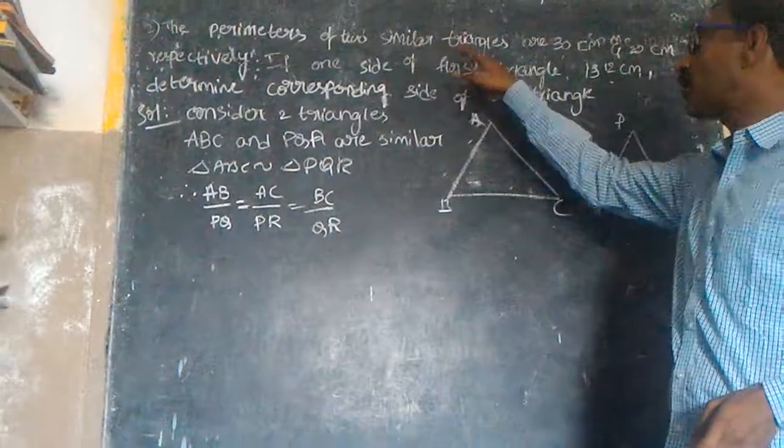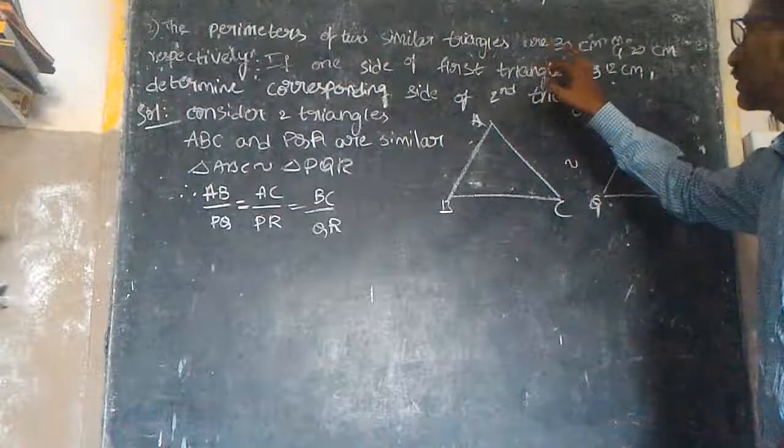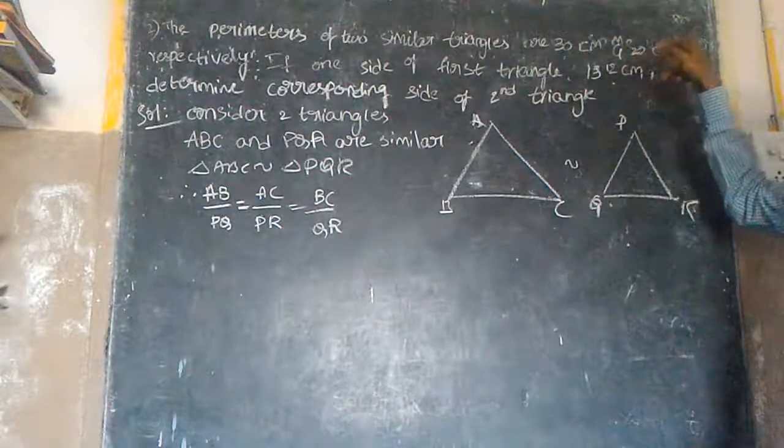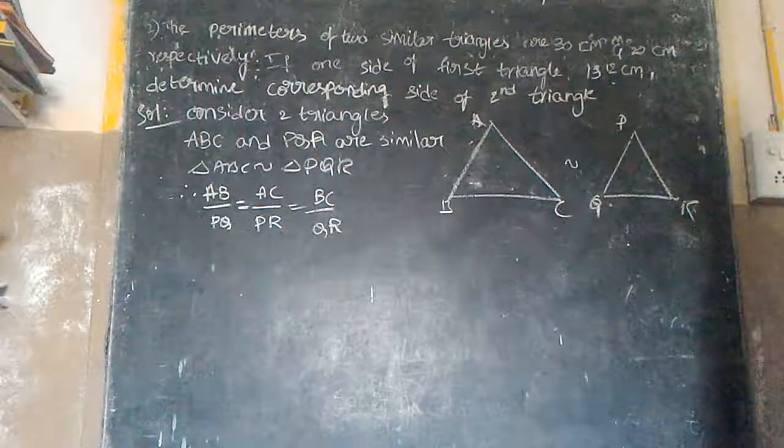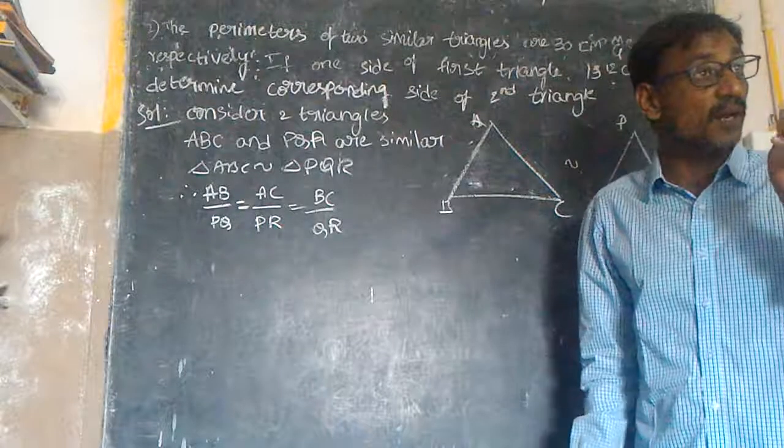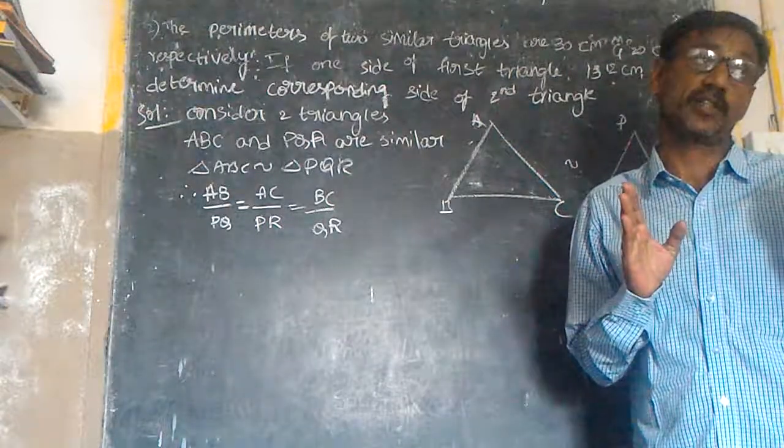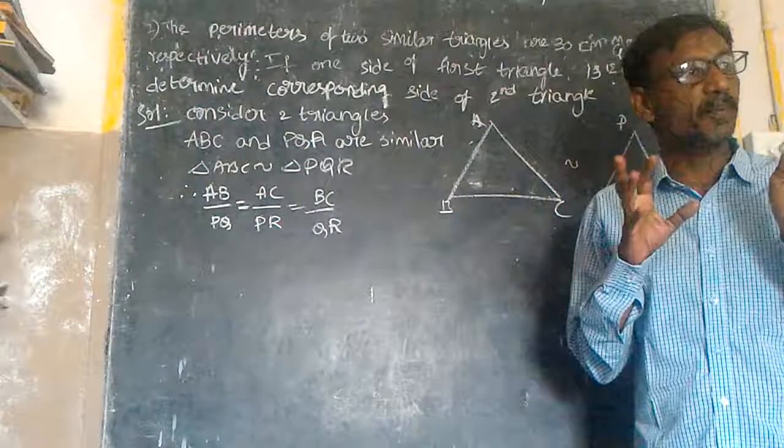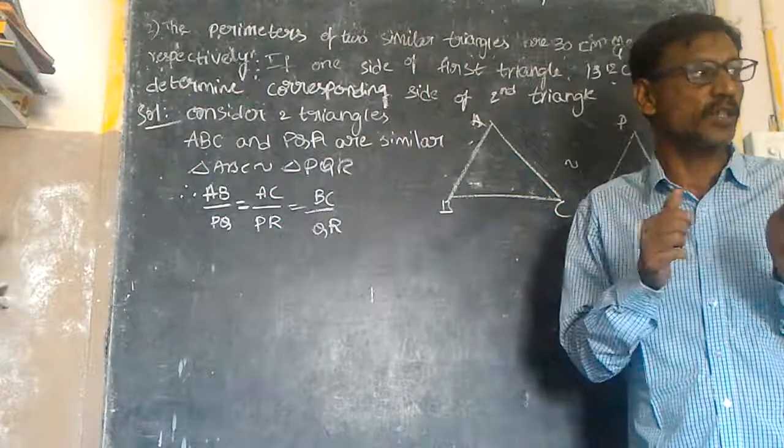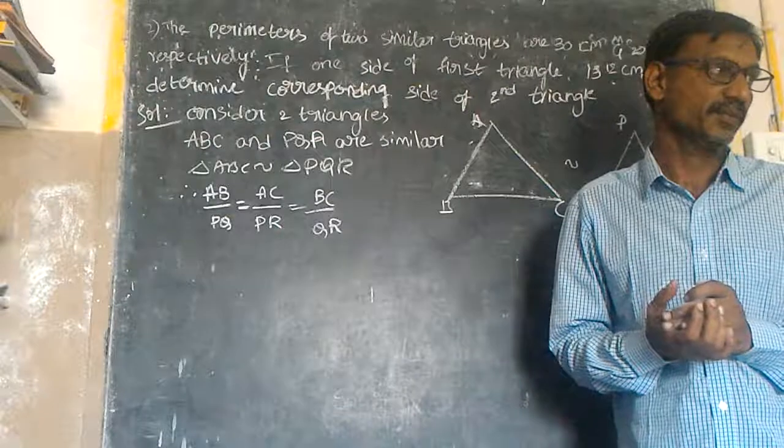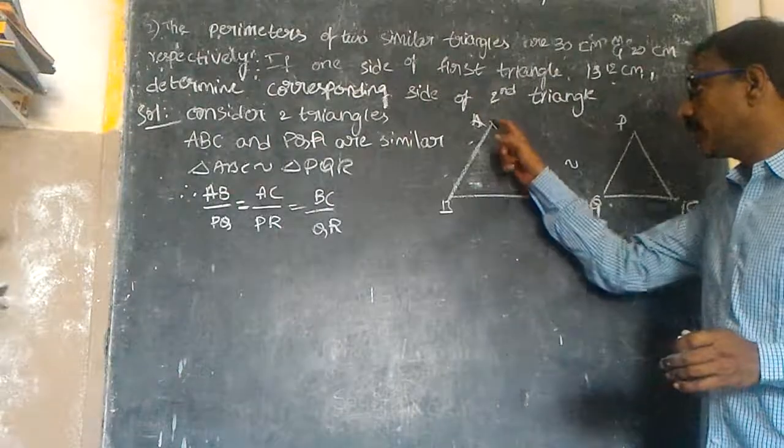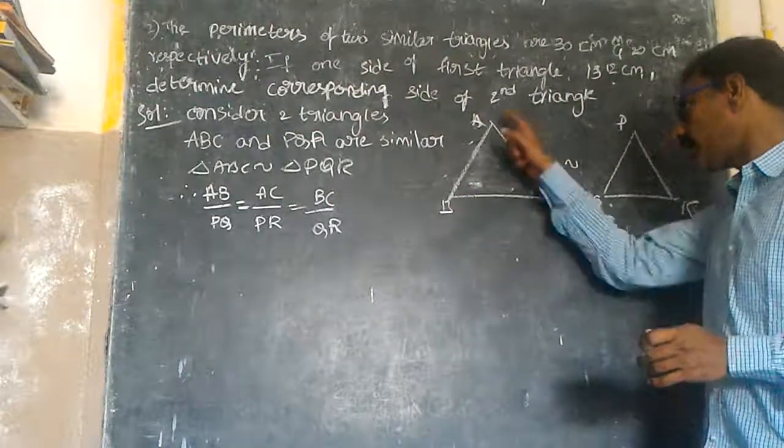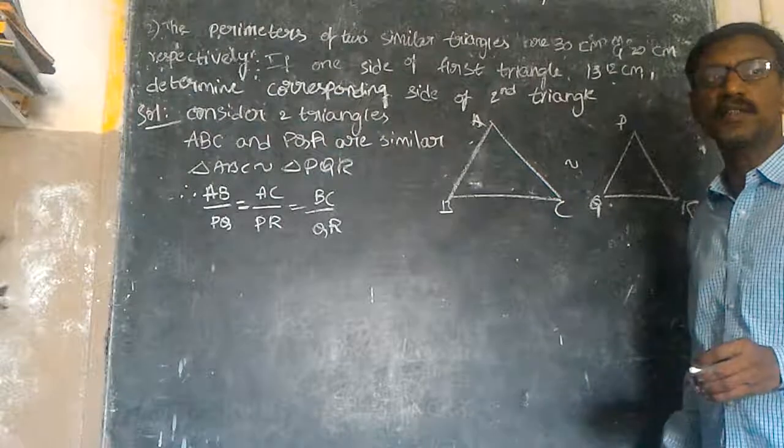The perimeters of two similar triangles are 30 cm and 20 cm respectively. If there are two triangles, then the perimeters are 30 cm and 20 cm.